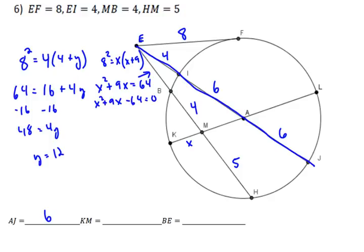Unfortunately this does not factor nicely, so we've got to do the quadratic formula. The quadratic formula is negative B, so negative 9. We only have to do plus because the minus would give us a negative value for EB, for what we've called X.